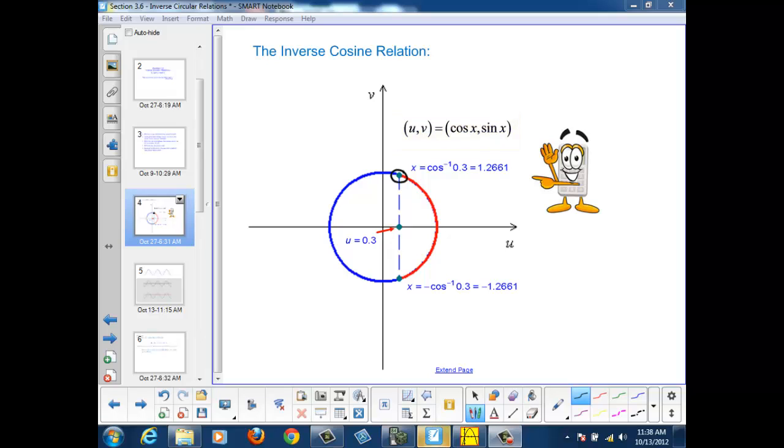So if we chose this point here, we needed to travel along the circumference or through this angle to reach that point u, v. If we draw a reference triangle for that angle, we would see that the adjacent side is u,